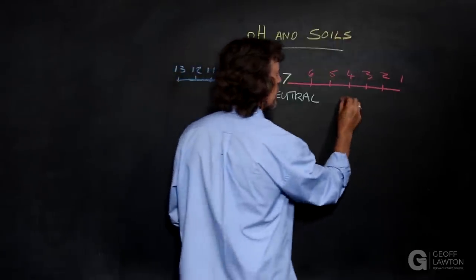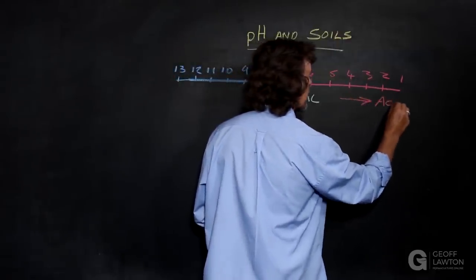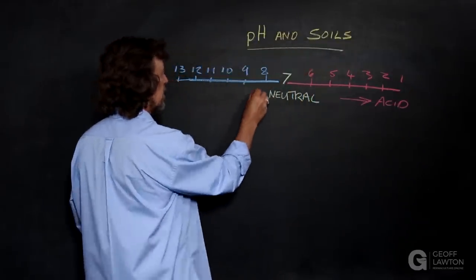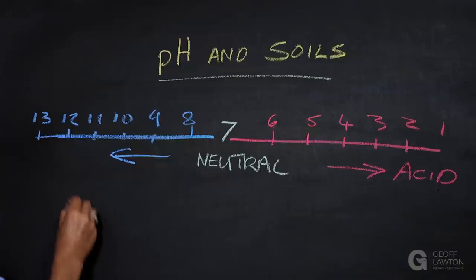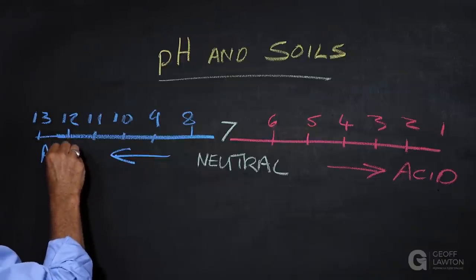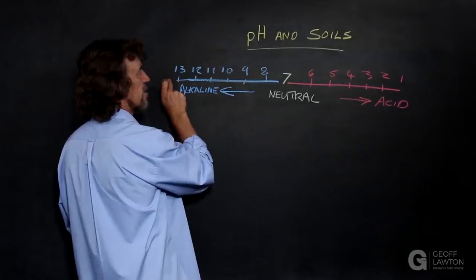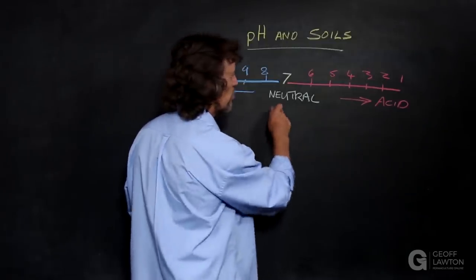This is acid—actually sulfuric acid at this end. And this is alkaline. And this is caustic soda at this end. And this is neutral, right in the middle.